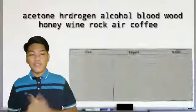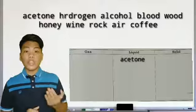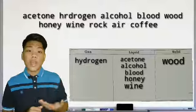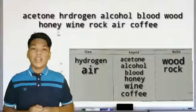Let's categorize them based on their physical state. We're going to put the acetone on liquid, the hydrogen on the gas, the alcohol is also on the liquid, and also the blood. The wood is on the solid, the honey is on the liquid, and also the wine. The rock is on the solid, air is in the gas, coffee is in the liquid.